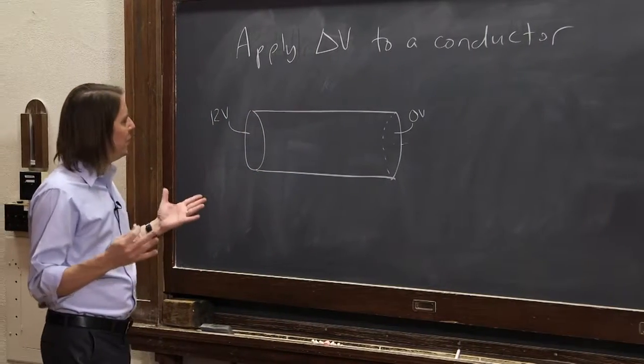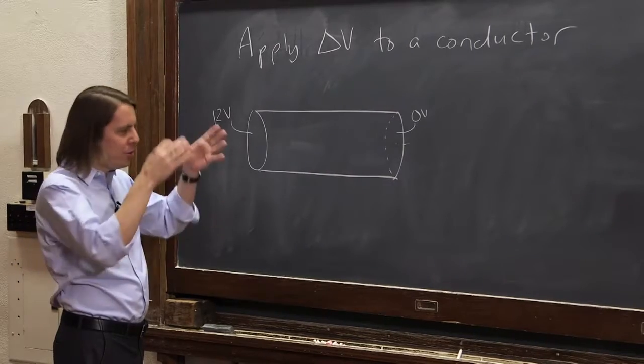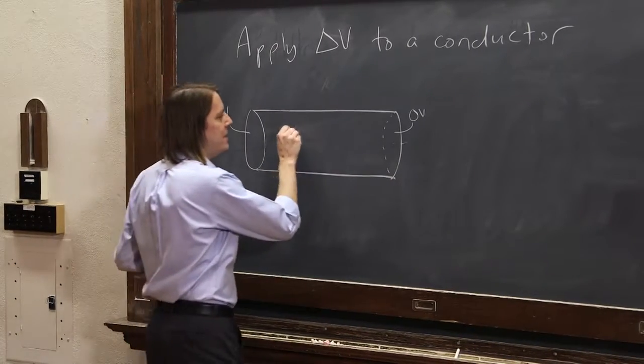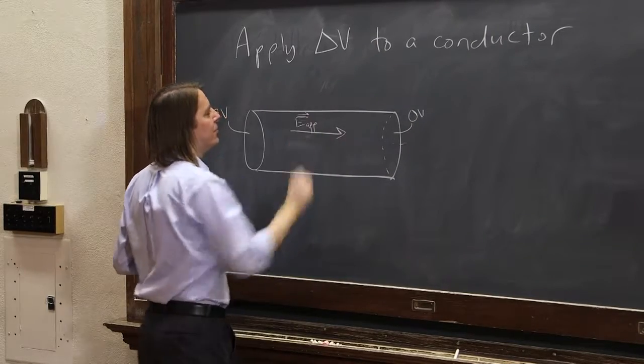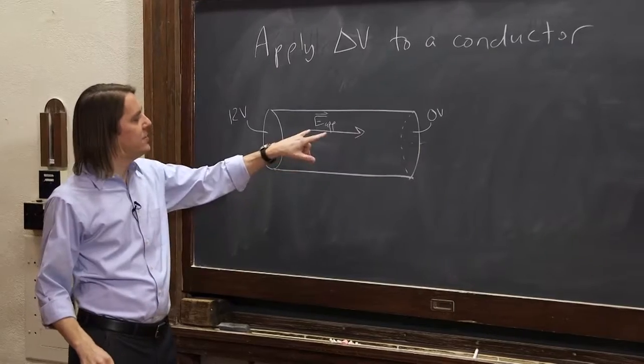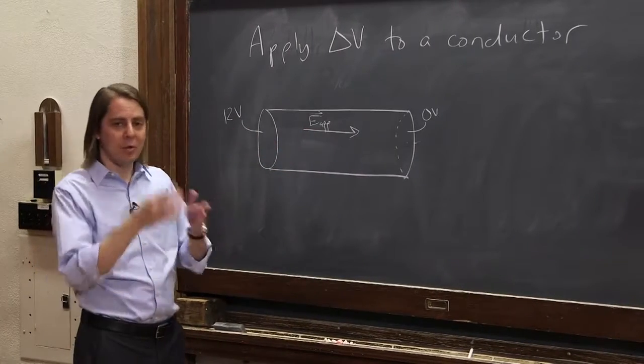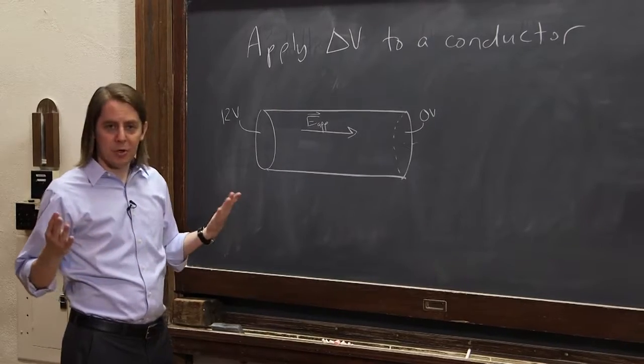And what's going to happen? Well, we know that this is similar to when we talked about a conductor before. If you put it in an electric field, you have some E applied, an applied electric field from the positive to the negative terminal. This was the E, sort of like the one that's between the battery terminals.